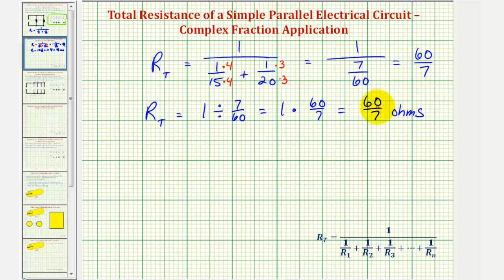Let's also convert this to a mixed number, which means we'd have to divide sixty by seven. Sixty divided by seven. There are eight sevens in sixty. Eight times seven is fifty-six, subtract, we have a remainder of four.